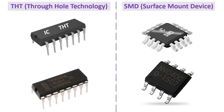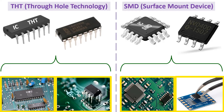Integrated circuits can be produced in THT type, or through-hole technology, to be soldered to punched cards, or in SMD, or surface mount device cases, to be soldered on a circuit board. THT ICs can be easily used by mounting on a breadboard or soldering to a perforated plate and printed circuit board. SMD ICs, on the other hand, are much smaller because they are designed for use on circuit boards produced by machines.